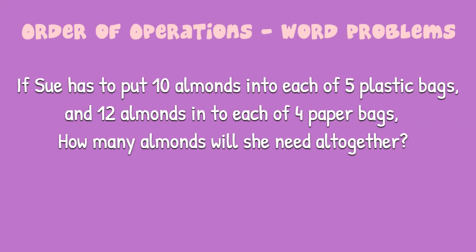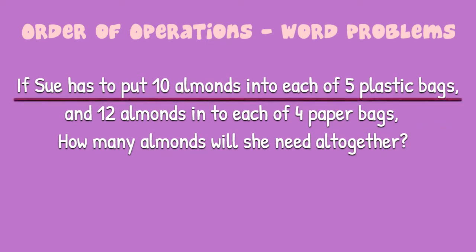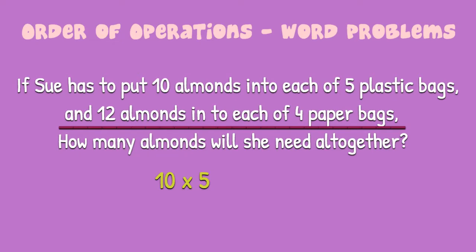Let's start with the first part. She's got 10 almonds and she's going to have 5 bags with 10 almonds in each bag. So, we can write that as 10 times 5. Then the second part is 12 almonds and she's got 4 bags with 12 almonds in each bag. So, we can write that as 12 times 4.